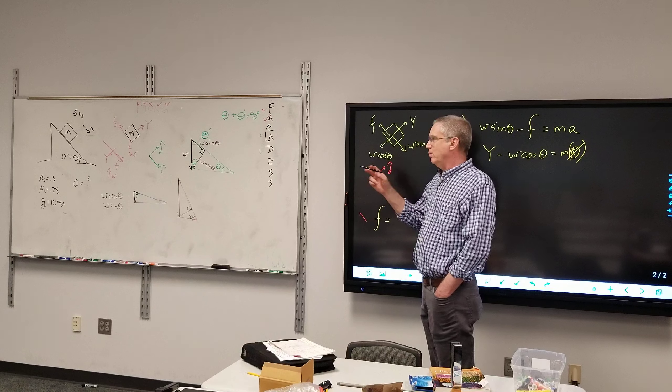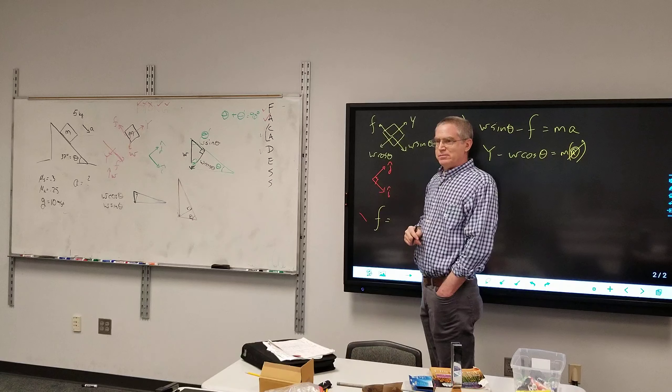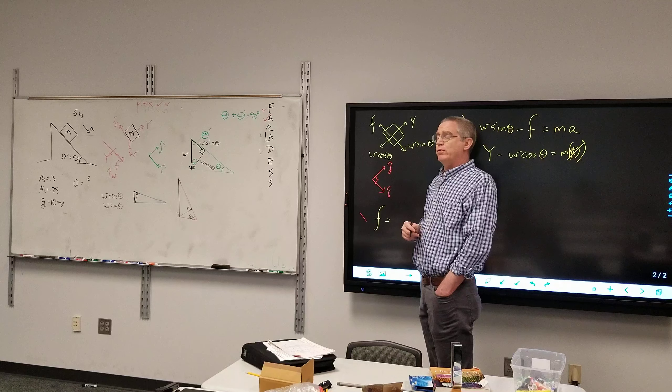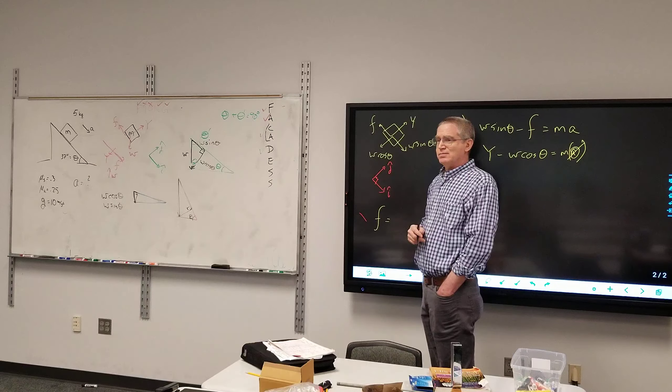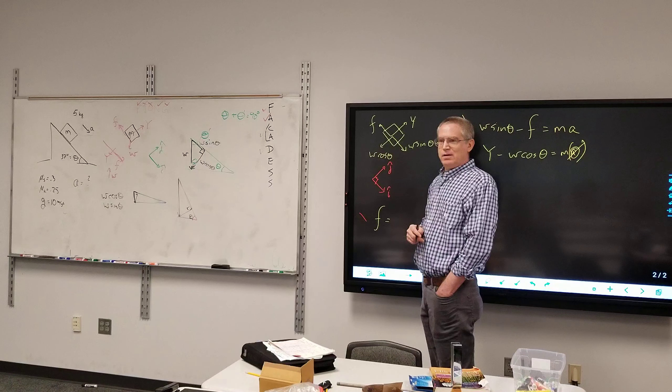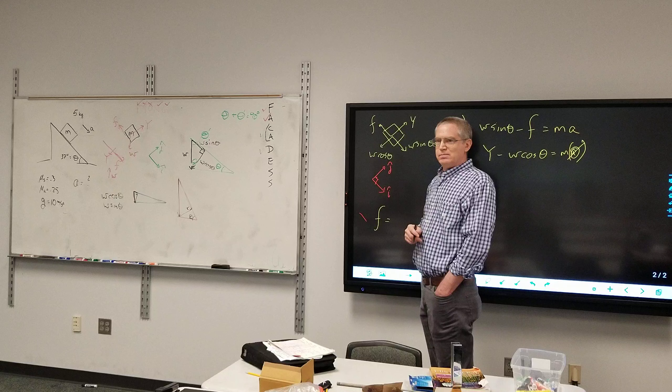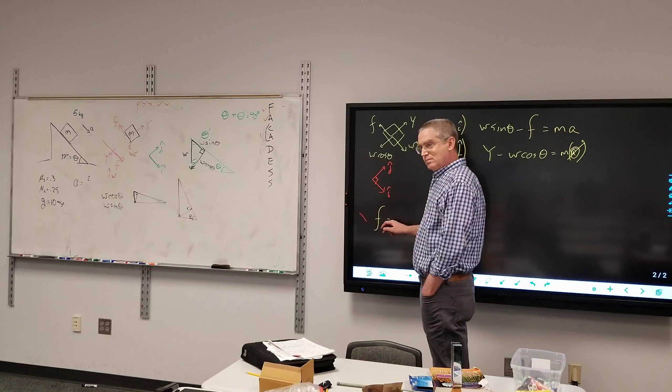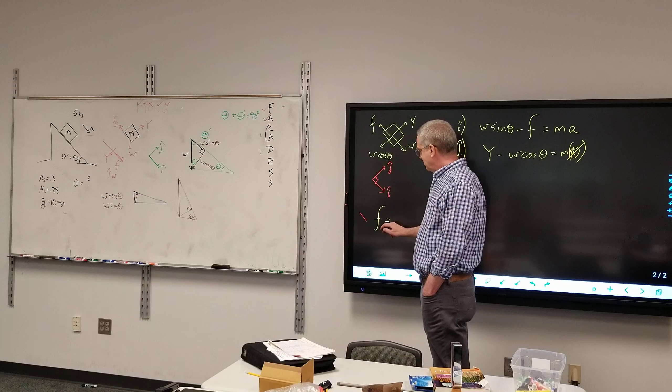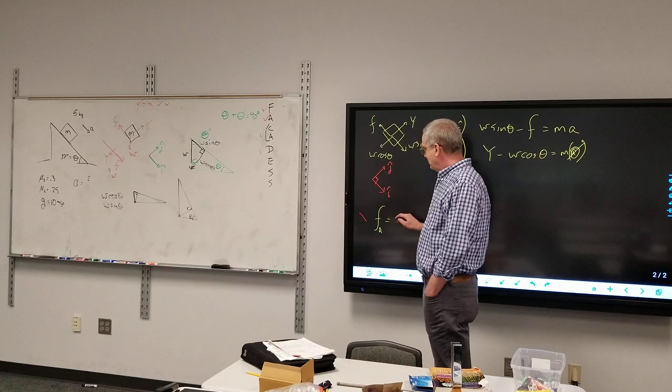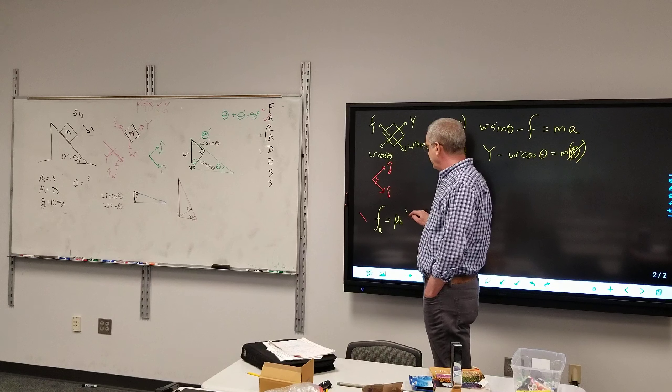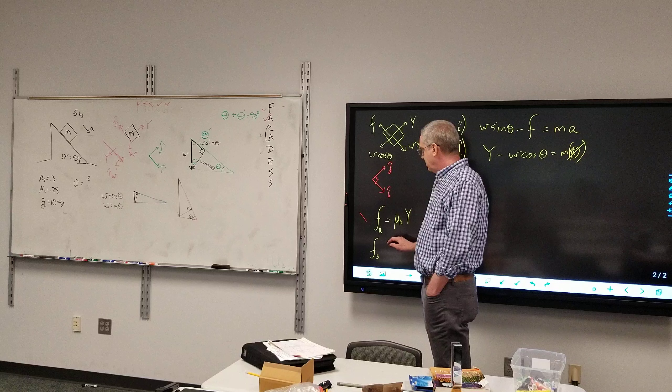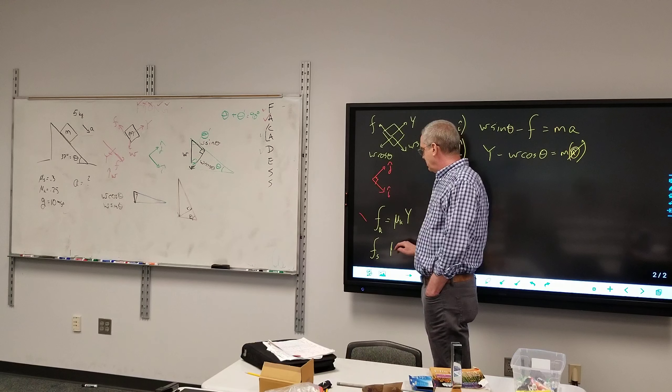What are the mu formulas? Otherwise known as friction formulas. So, is it F_K equals mu_K times Y? Mu. Mu K times Y times the normal force. Yep. And then F_S equals mu_S times Y?